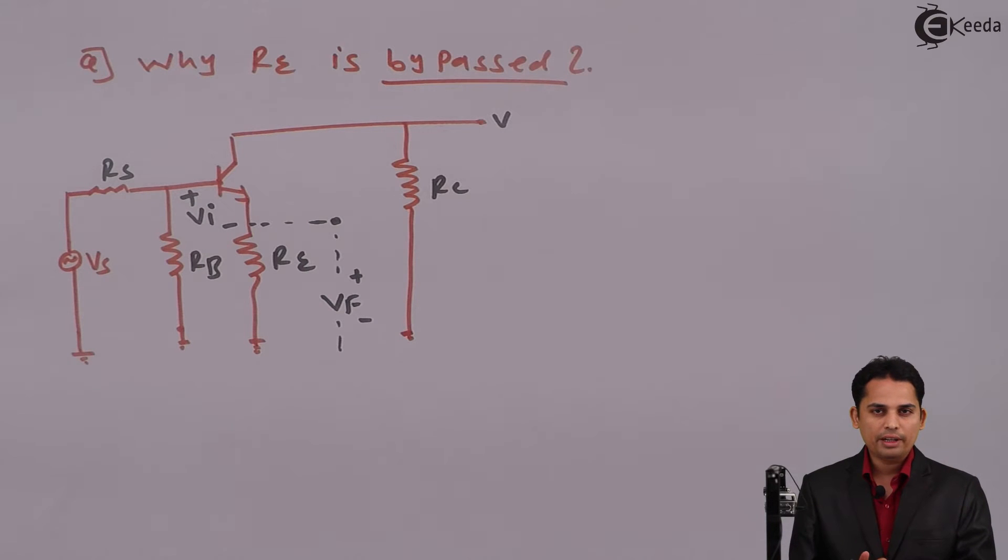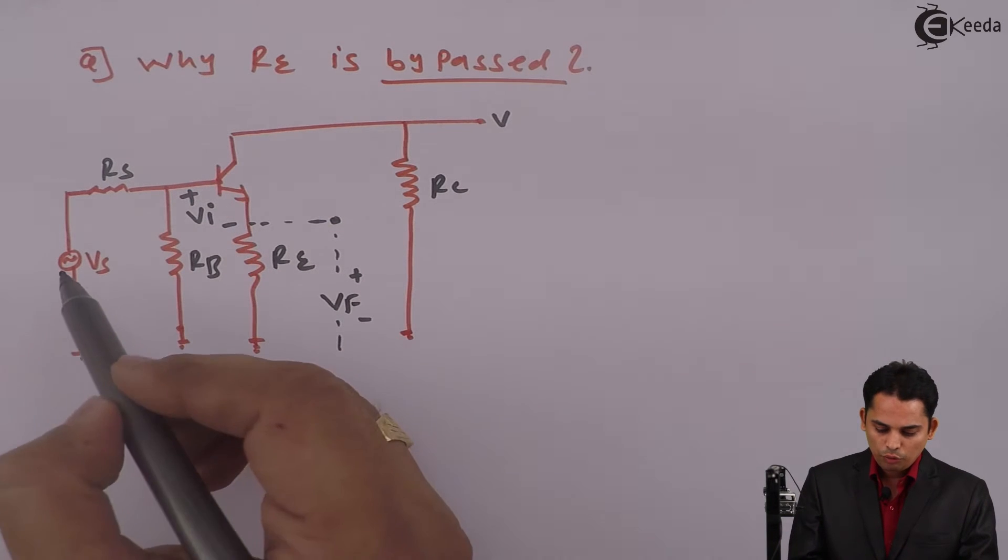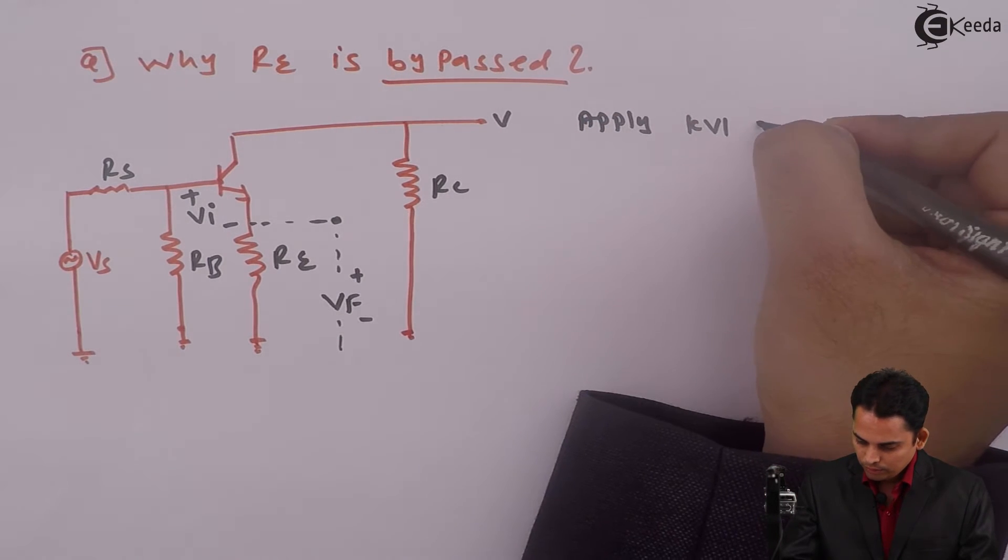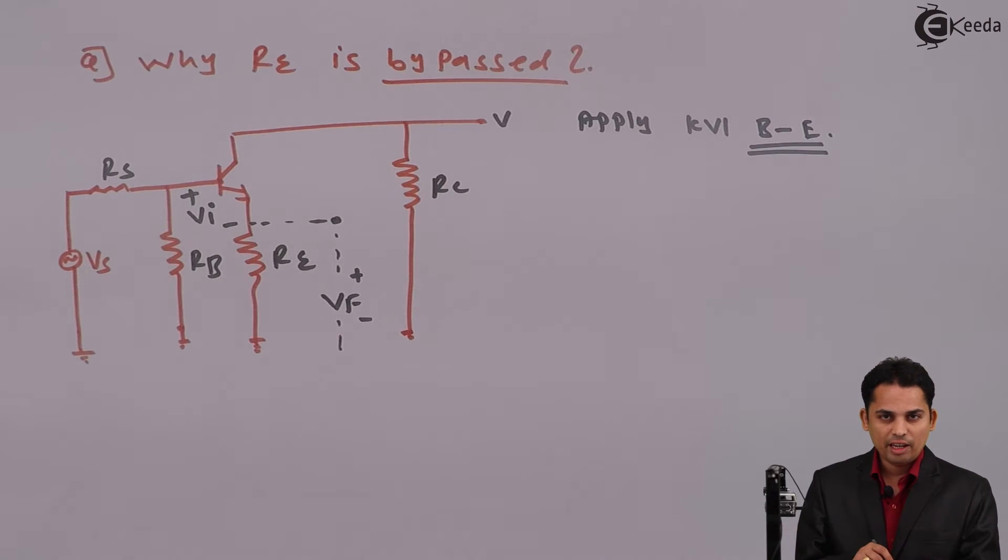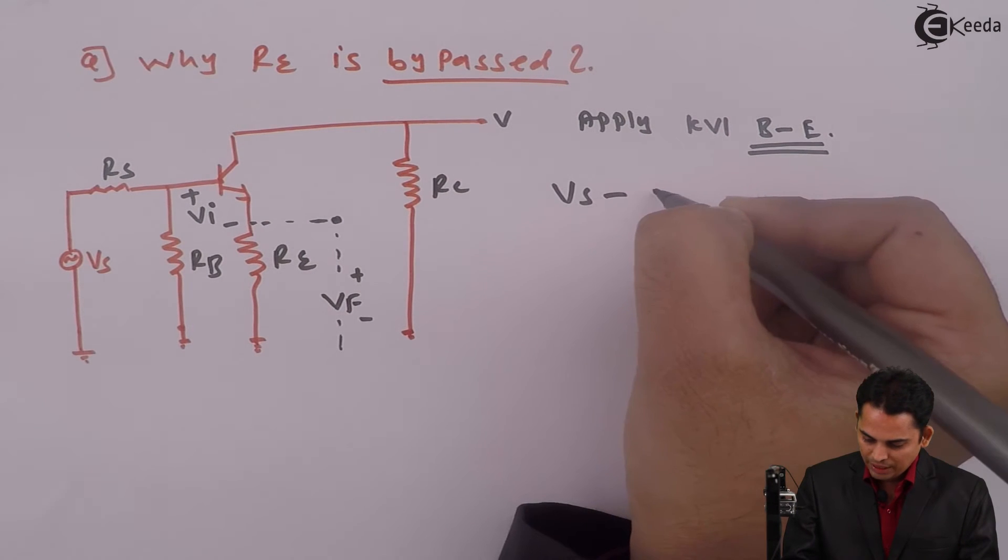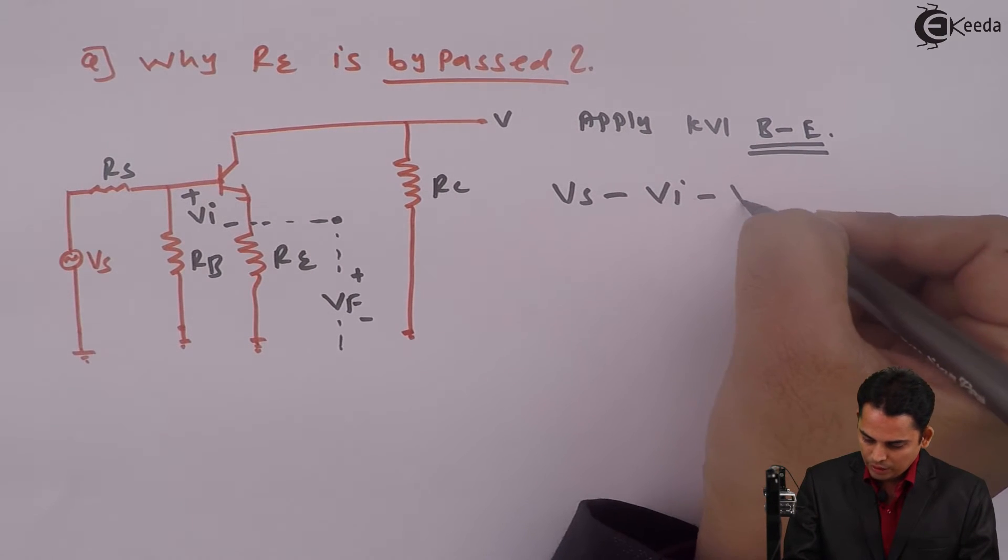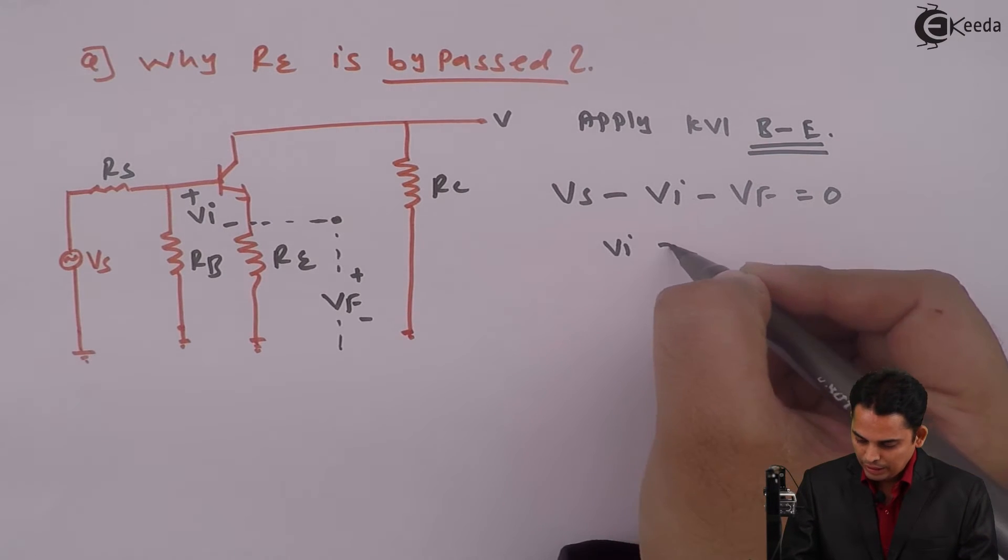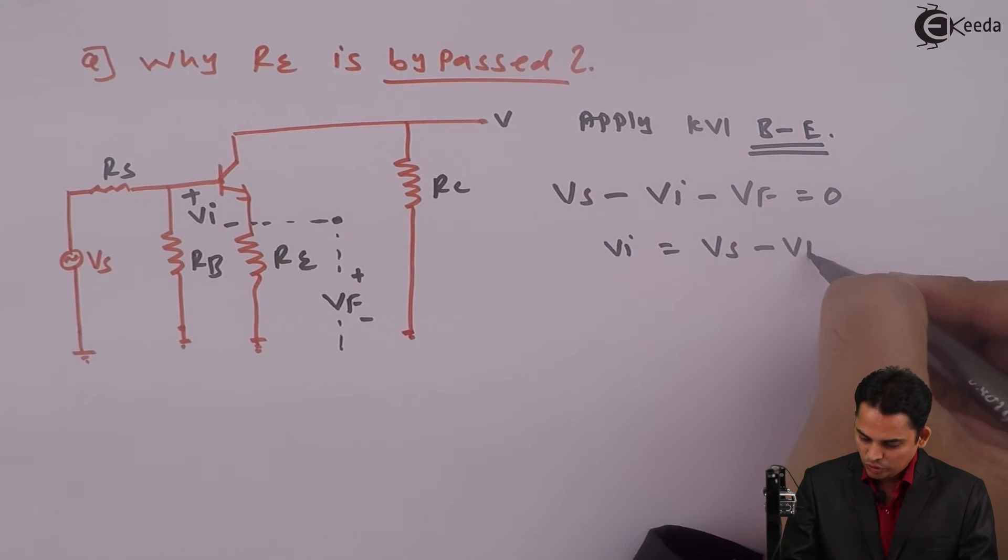First of all, in DC analysis, because of RE stability is increasing. Now let us see what is happening in AC analysis. I will apply KVL from base to emitter. If we apply KVL from base to emitter we will get equation as VS minus VI minus VF is equal to zero, and hence VI is equal to VS minus VF.